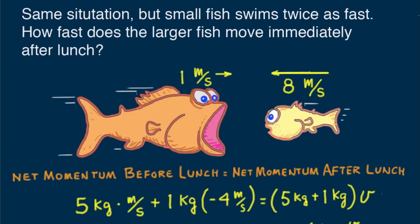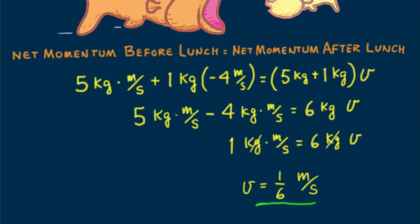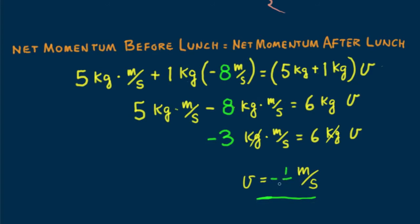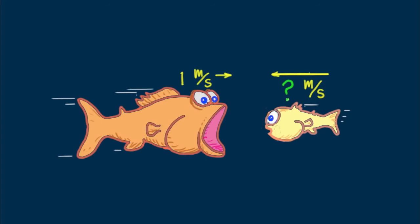Suppose the smaller fish were swimming twice as fast — at eight meters per second. Changing minus four to minus eight meters per second in our prior calculation, the final velocity is minus one-half meter per second. The minus sign means the two-fish system moves backward to the left after lunch. I want to leave you with a question: how fast would the small fish have to swim to halt the large fish in its tracks — that is, what speed brings the net momentum to zero? Until next time, good energy!